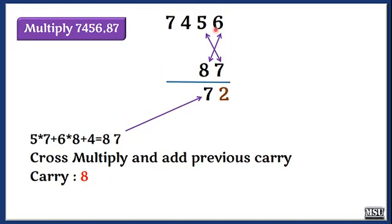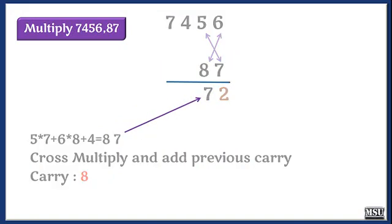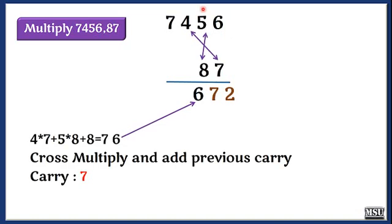I am going to leave this 6 and consider only 4 and 5. 4 into 7 and 5 into 8 is 76. Keep remember that we are going to add the carry also.